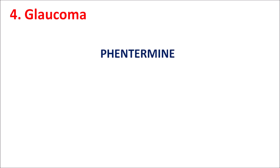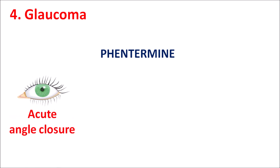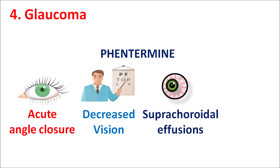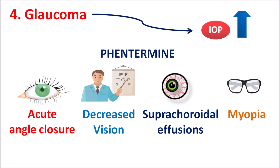The fourth contraindication is glaucoma. With increased use of phentermine, acute angle closure can be observed, and the drug may also decrease vision. When combined with topiramate, it can increase suprachoroidal effusions and even develop myopia. If a patient already has a history of glaucoma with raised intraocular pressure, phentermine can further increase IOP, thereby increasing the risk of severe glaucoma — so phentermine is contraindicated in these patients.